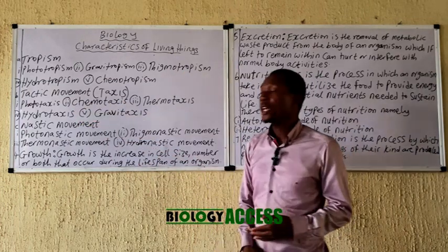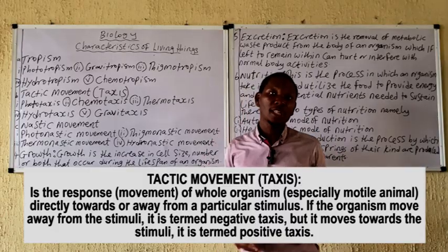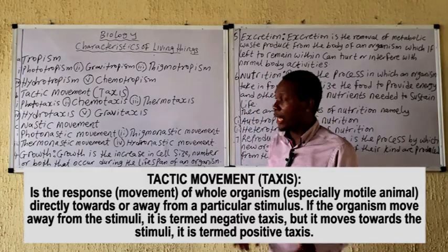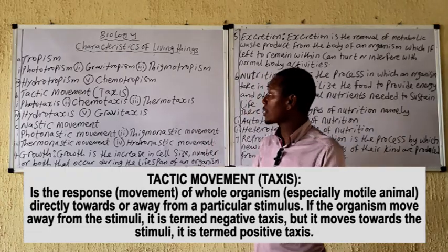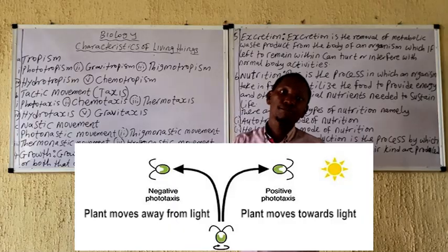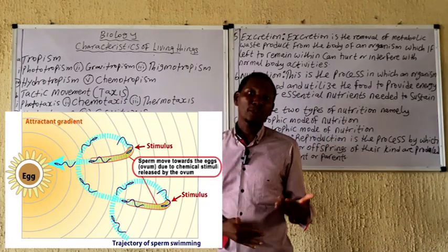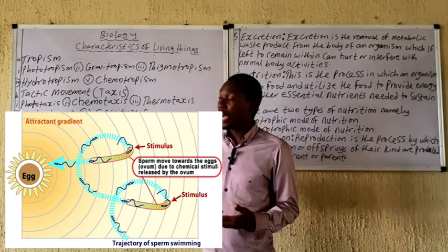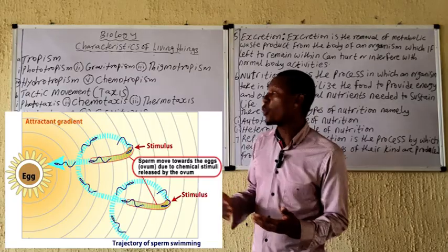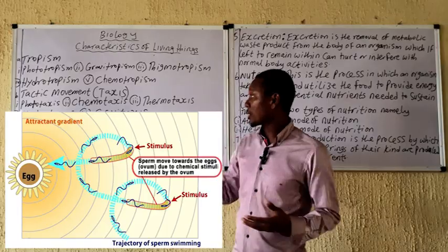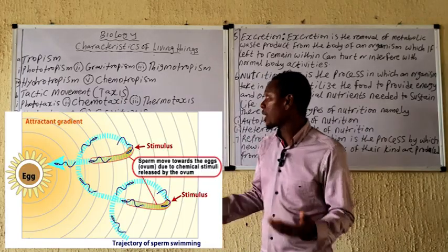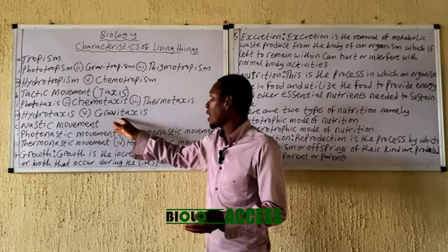Another response is tactic movement or taxis. Taxis is the directional movement of organisms in response to a directional stimuli. Usually, animals move their whole body parts. Phototaxis is the directional movement of animals in response to a light stimuli. Chemotaxis is the directional movement of organisms in response to a chemical stimuli. If the organism moves towards the stimuli it is positive, and if moving away it is negative. For example, spermatozoa move towards a chemical — as seen in the diagram — which is called positive chemotaxis. The same applies to hydrotaxis and gravitaxis.